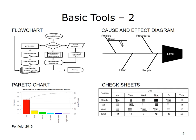Pareto Chart: Filfredo, an Italian economist in the 1880s, observed that 80% of the wealth in Italy was held by 20% of the population. Juran later applied this Pareto principle and found that 80% of the variation of any characteristic is caused by only 20% of the possible variables. A Pareto chart is a display of the frequency of occurrences that helps show the vital few contributors to a problem so that management can concentrate resources on correcting these major contributors. TOG, 2004.